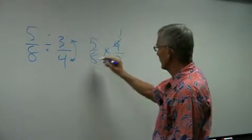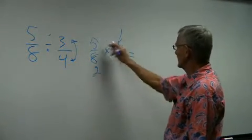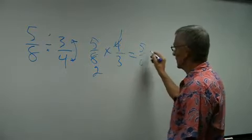4 goes into 4 once. 4 goes into 8 two times. 3 and 5 I can't do anything with, so 5 times 1 is 5, and 2 times 3 is 6, and my answer turns out to be 5 sixths.